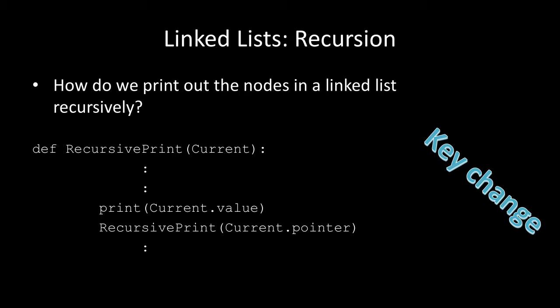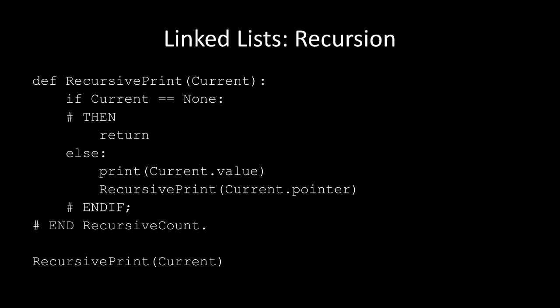If we want to print out each value in the linked list, it's almost exactly the same. We have a method called recursive_print, and we keep calling recursive_print with the next element of the list — current.pointer — and just print out the current value. Print out the current value, then visit the next element, print that, then visit the next, and so on. If we get to the end of the list — null or None — then stop. The only difference is, instead of doing a loop, we just keep calling the same method over and over again. When current is None, we return nothing.